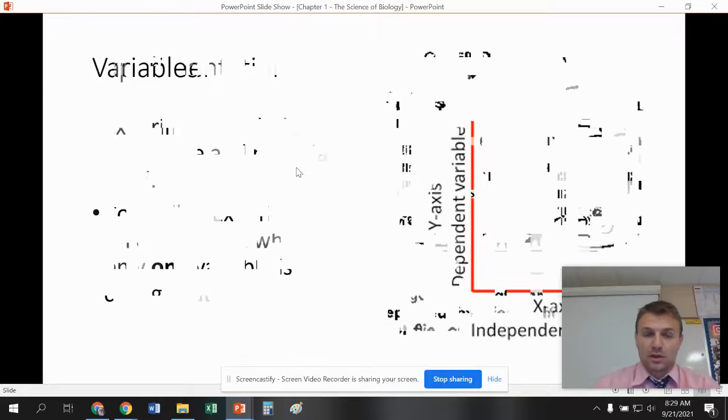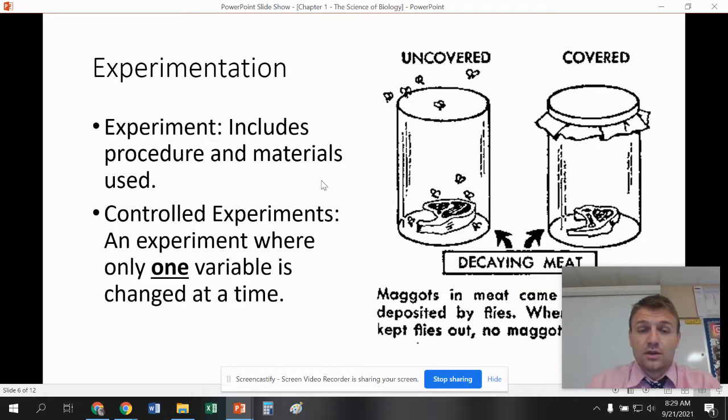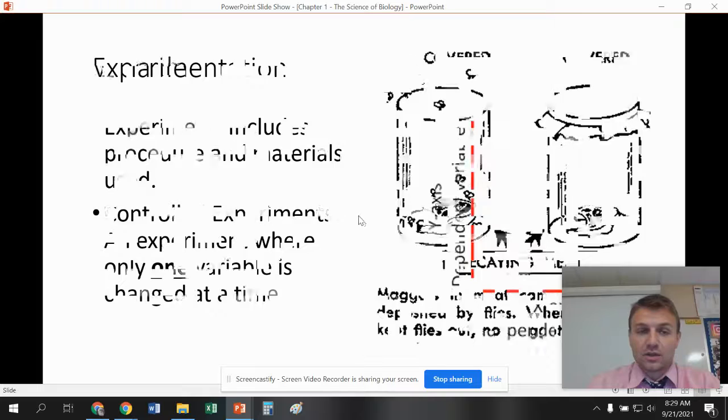Experimentation, this includes all of the procedures and materials that you use in an experiment. We do controlled experiments in here, which means that every experiment is going to have only one variable that's changed, and that's going to be your independent variable. And that's what we're going to go over next. Remember, only one variable has changed.